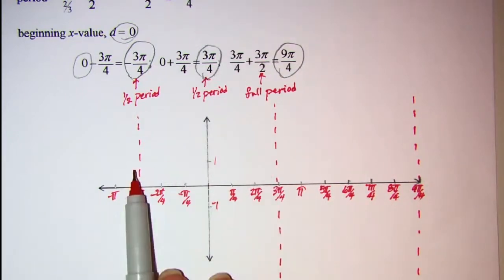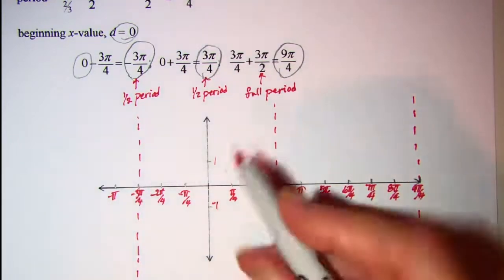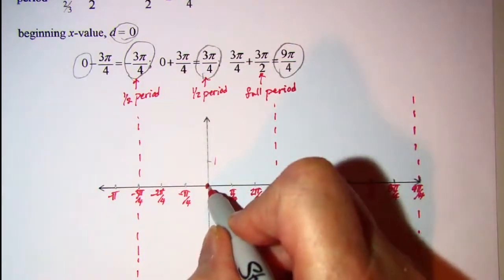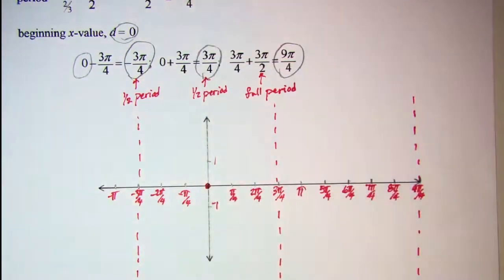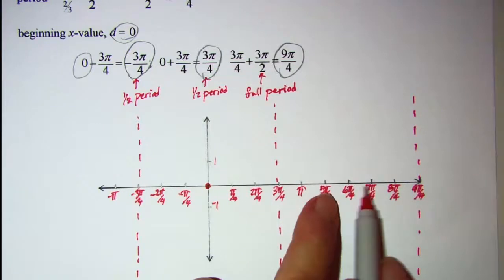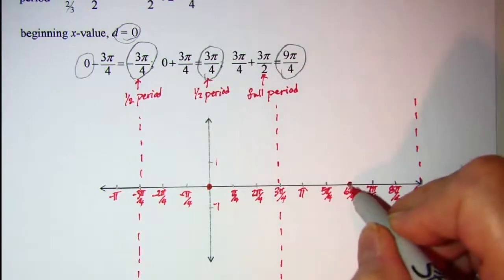Halfway between the asymptotes I have my zero, so I have a zero here at 0 and I have a zero at 3π over 2.